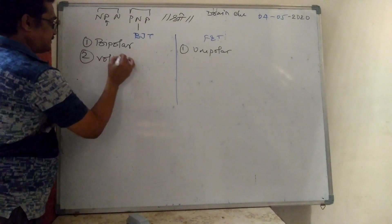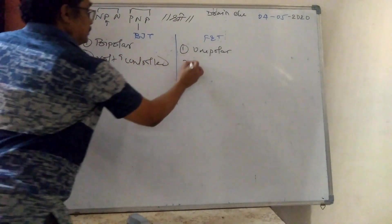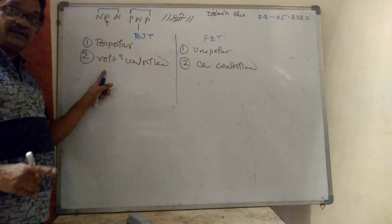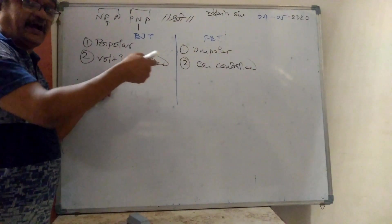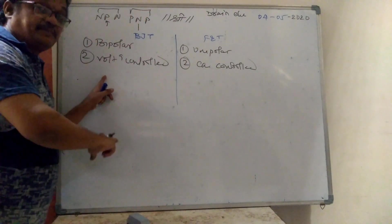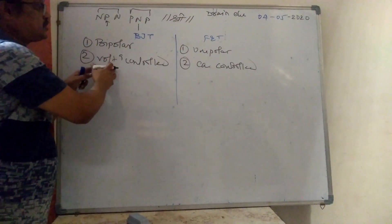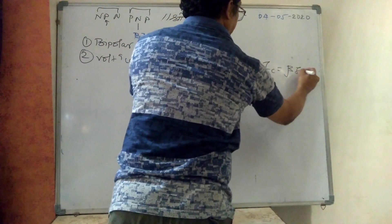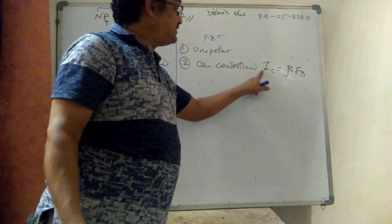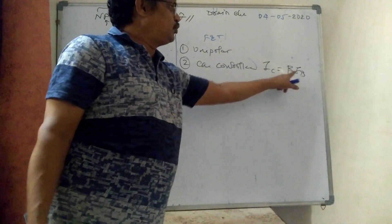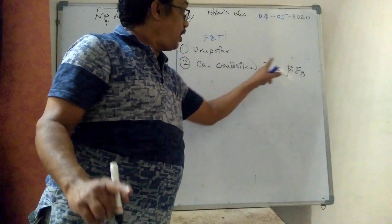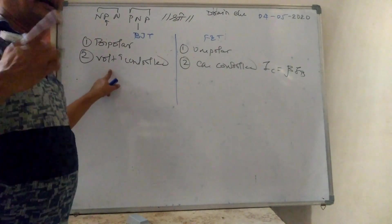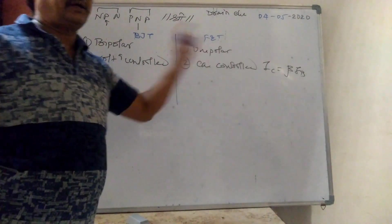Second difference: FET is a voltage-controlled device; BJT is a current-controlled device. In FET, input voltage VGS controls output current ID — VGS zero gives ID maximum, VGS maximum gives ID zero. In BJT, IC equals beta times IB, meaning output current changes with input current — so BJT is current-controlled. Third difference: FET has very high input resistance in mega ohms; BJT has input resistance in kilo ohms.